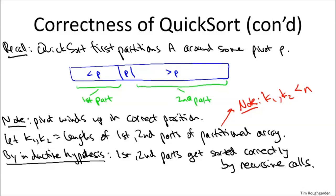And to be very precise, what we're using to argue that the recursive calls are correct are P(K1) and P(K2), where P is the assertion that QuickSort is always correct on arrays of length K1 and K2. And we know that both of these statements are true because K1 and K2 are both less than n and because of the inductive hypothesis.